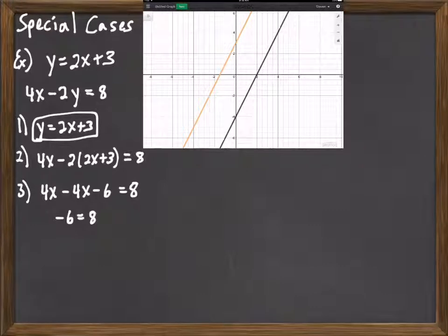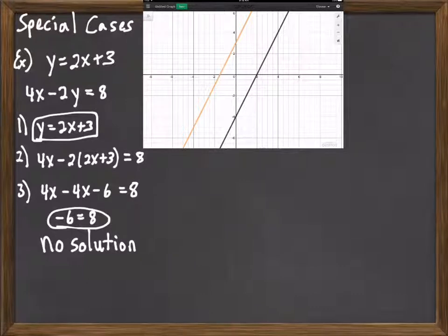So when we're solving a system and the variables disappear like this, that's our indication that there is no solution. These two things are parallel lines. They're never going to cross. Another name for no solution is to say that the system is inconsistent. So we say no solution or inconsistent. They both mean the same thing.